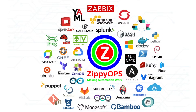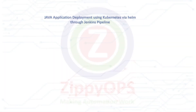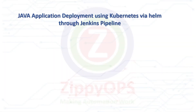Hi all. Welcome to Java application deployment on the on-prem Kubernetes cluster using Helm demo. In this video, we are going to demonstrate the deployment of Java applications on the on-prem Kubernetes cluster using Helm. The complete process is orchestrated through the Jenkins pipeline.